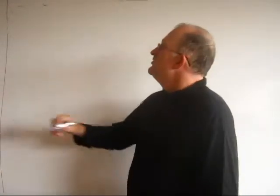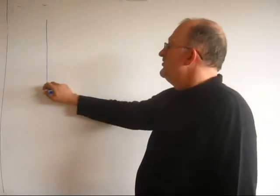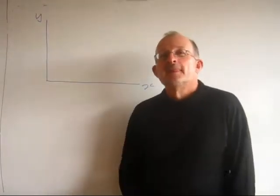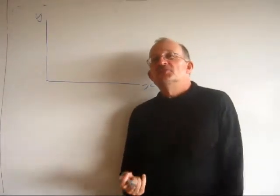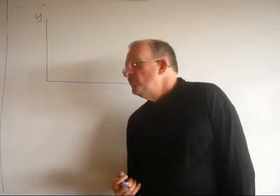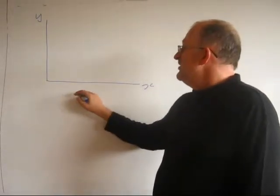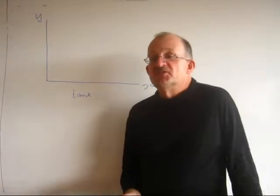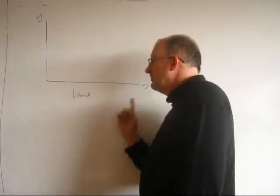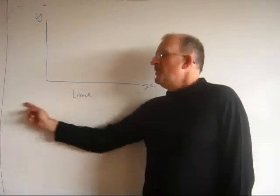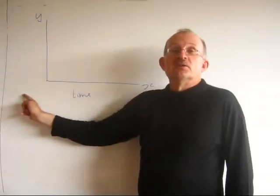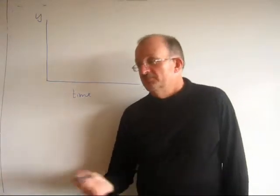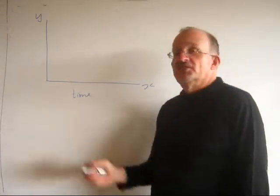First thing, we're going to do a standard Cartesian graph. We have an x-axis and a y-axis. A graph is going to have information, so we've got to label these. I'm going to say this is time, because I'm going to be doing a distance-time graph. Normally when we're doing a graph, the thing that we change goes along the bottom, and the thing we're measuring goes up the side. So time usually goes along the bottom.